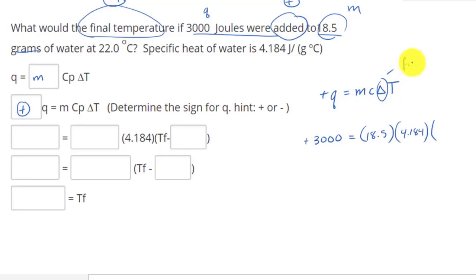Well, if this is in terms of temperature, we have our Tf minus Ti. So we don't know anything about Tf, but we know about Ti. It is at 22 degrees Celsius. So 22.0.